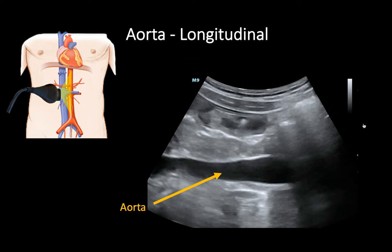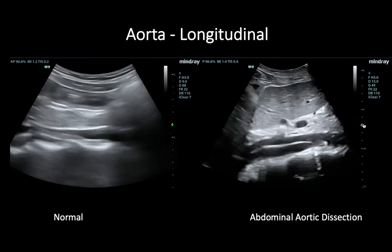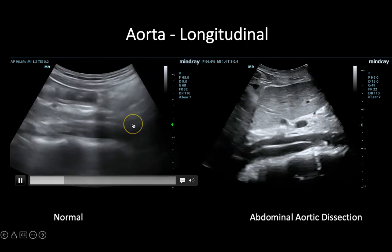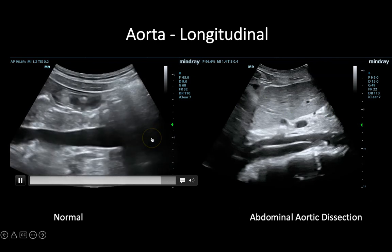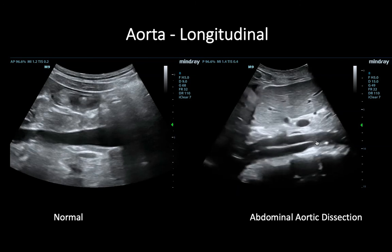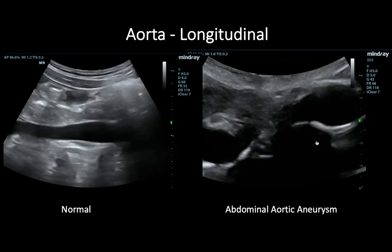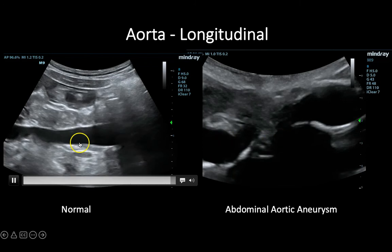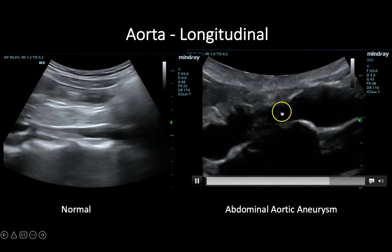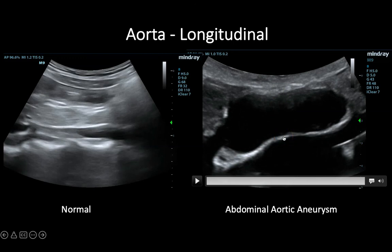Here's a still image of the aorta in longitudinal view, generated by turning the probe 90 degrees to see the entire length of the vessel. In a normal longitudinal clip, the lumen of the vessel is anechoic throughout and the caliber stays consistent. In a pathologic clip, a hyperechoic linear structure within the lumen is consistent with a dissection flap. A widening in caliber throughout the length of the aorta is consistent with an abdominal aortic aneurysm.